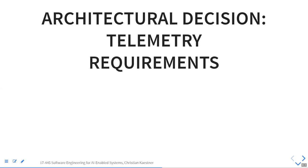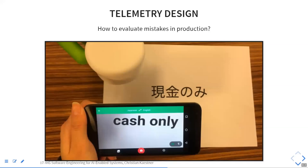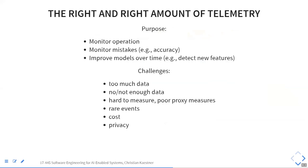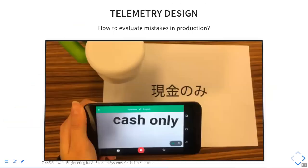Another big topic is telemetry, which we touch on in almost every lecture but requires significant design thought early on. Telemetry has two functions: seeing in production how well you're doing, and collecting new training data for future iterations. In this translation example: how can we detect when something is mistranslated or when characters aren't recognized? We want to design a mechanism to learn about mistakes and improve our models.